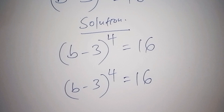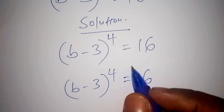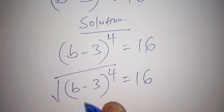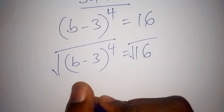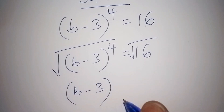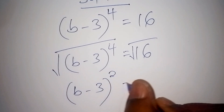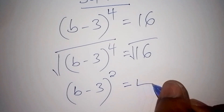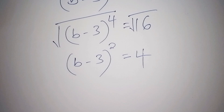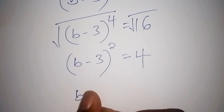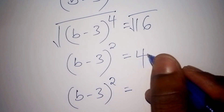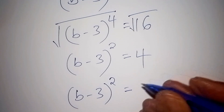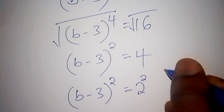Now we can introduce the square root from both sides. We shall have B minus 3, bracket to the power of 2, is equals to the square root of 16, which gives us 4. We can work out 4 in the form of a base and an index, so in this case we shall have 2 to the power of 2.